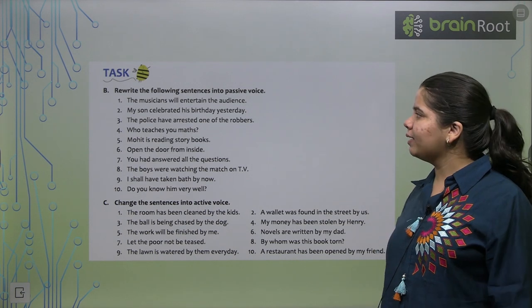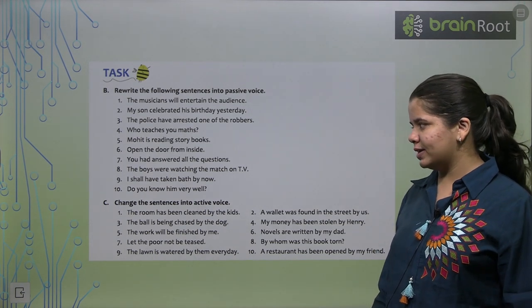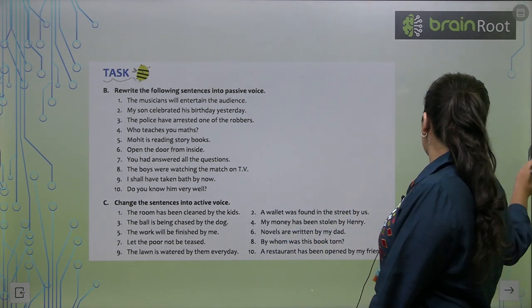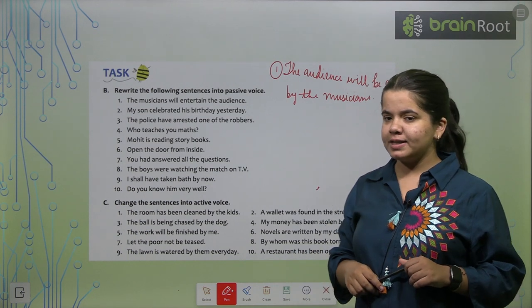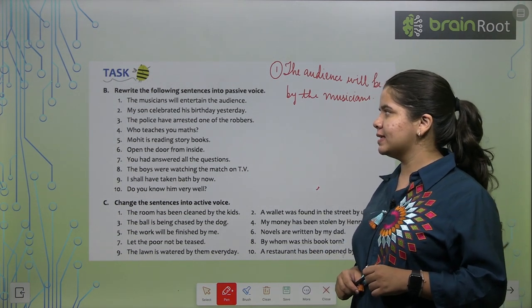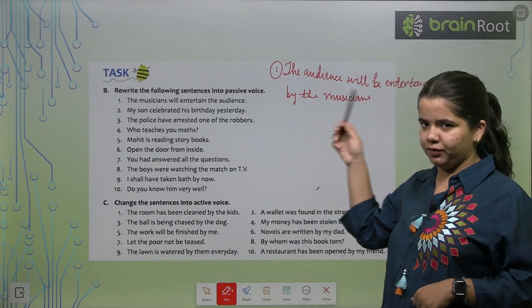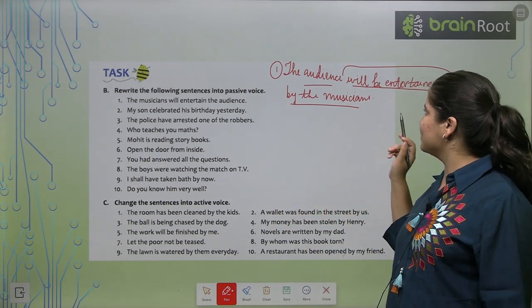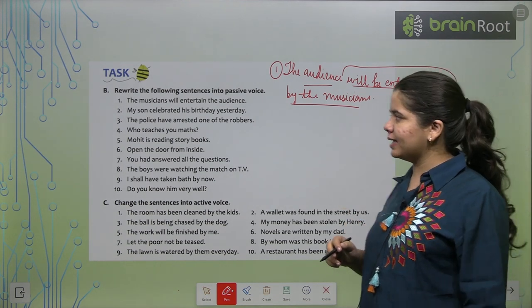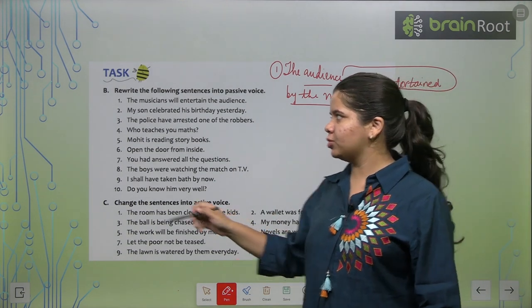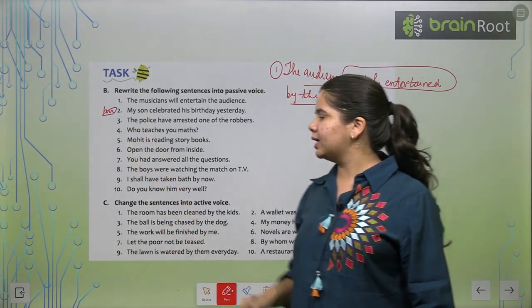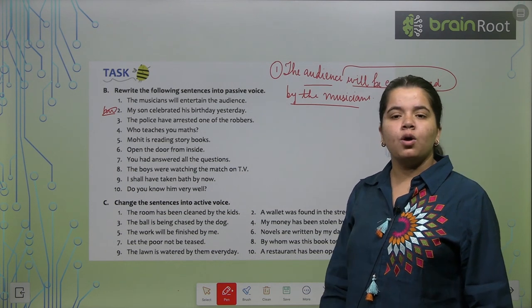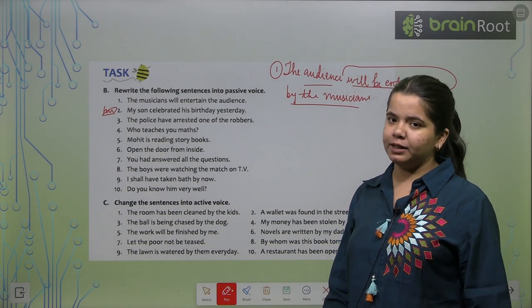Now we have the next task. Rewrite the following sentences into passive voice. We have ten. Five I am going to do for you, five will be your homework. So let's do it. Let's see the first sentence. The musicians will entertain the audience. So I have written the answer, the first one for you. I have written the answer for you. The audience will be entertained by the musicians. Second is your homework. We will do the alternative parts together. Third, the police have arrested one of the robbers. One of the robbers have been arrested by the police.